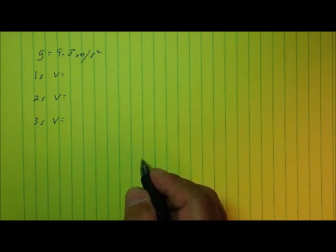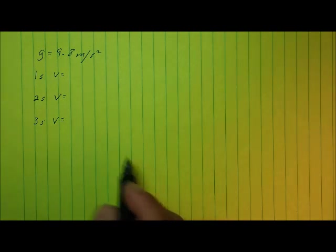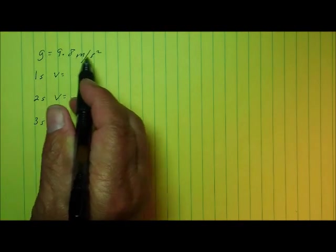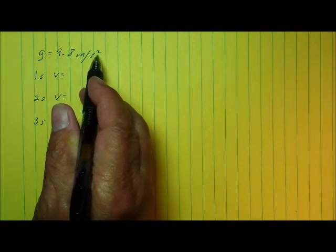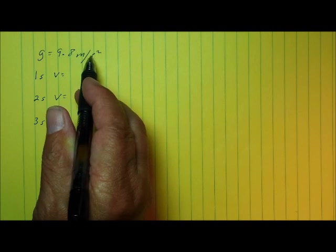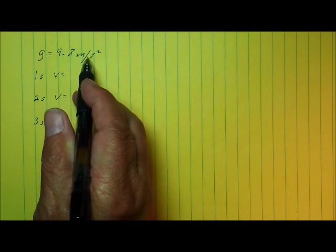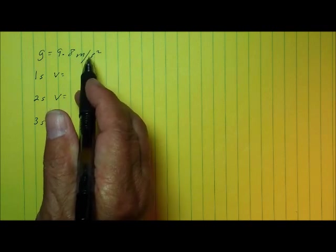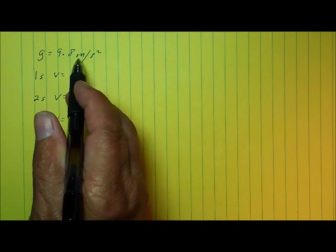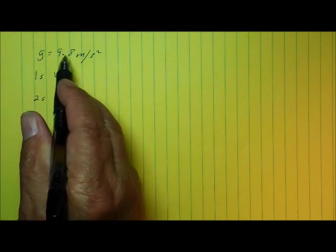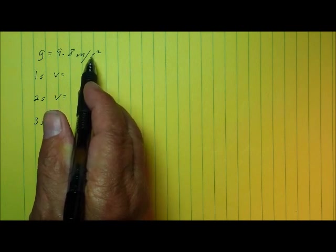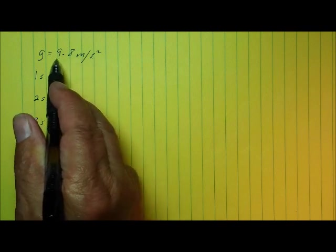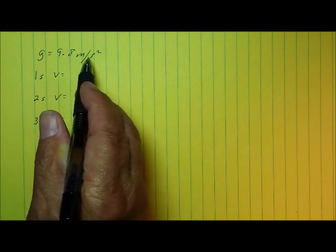In that video I explained that the acceleration due to gravity near the surface of the Earth is 9.8 meters per second squared. I said that if an object falls, neglecting air resistance, it will accelerate downward at 9.8 meters per second squared, meaning that its velocity during every second of motion will increase by 9.8 meters per second.